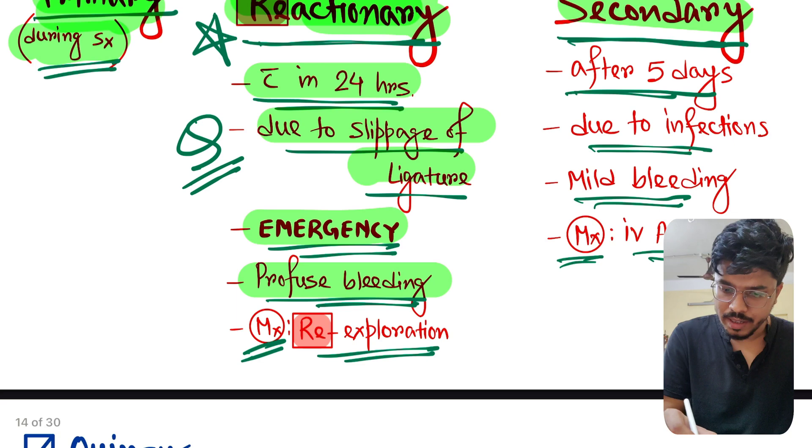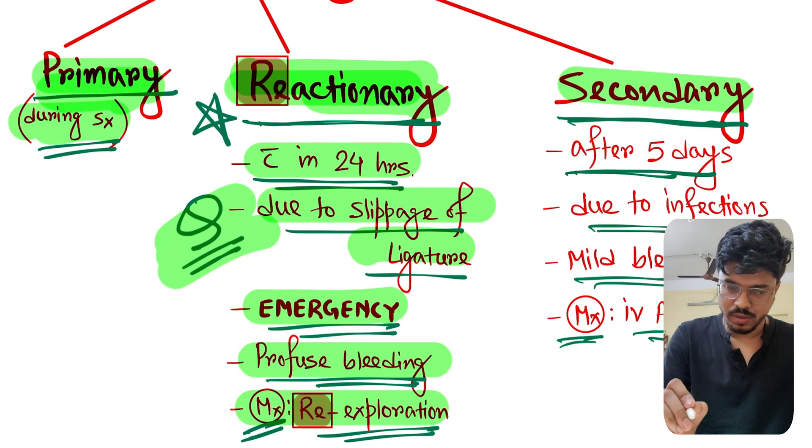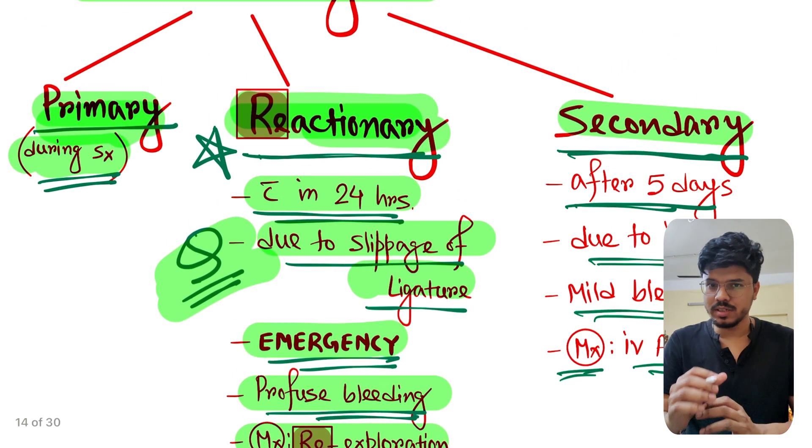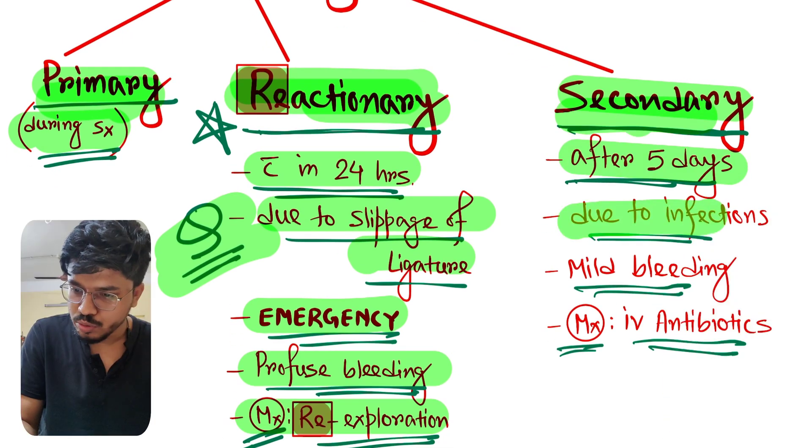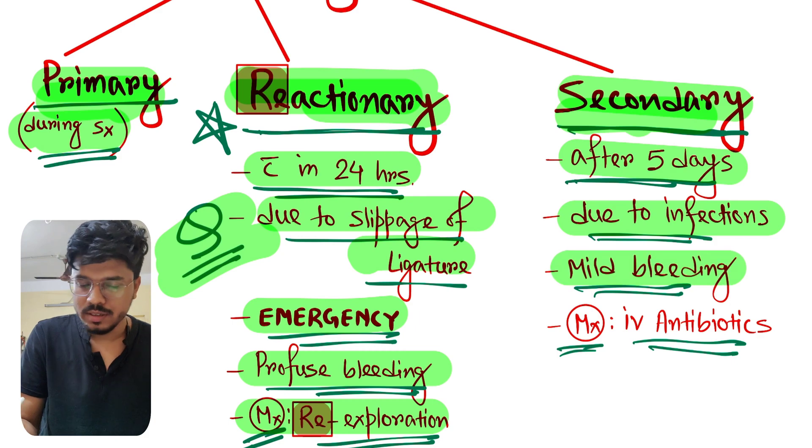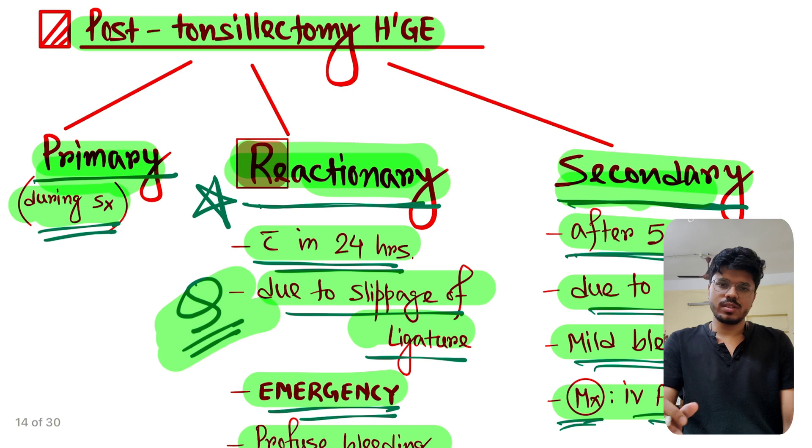This is a previous year question, so please revise it carefully. Secondary hemorrhage means after five days due to infections. Mild bleeding. As there is infection, management is IV antibiotics. So this is all about post-tonsillectomy hemorrhage.